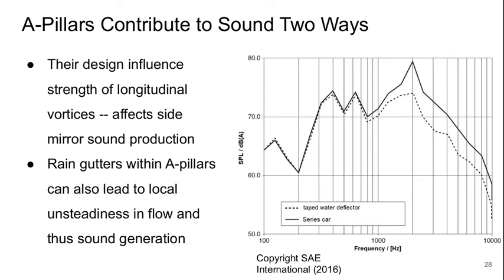The presence of A-pillars contributes to sound in two ways. Their design influences the strength of the longitudinal vortices going along the sides of the vehicle, which affects side mirror sound production. Rain gutters within the A-pillars can also lead to local unsteadiness in the flow and sound generation. Taping over the rain gutters shows a pretty significant reduction in noise, especially around a couple thousand hertz, and that reduction is maintained up to high frequencies.